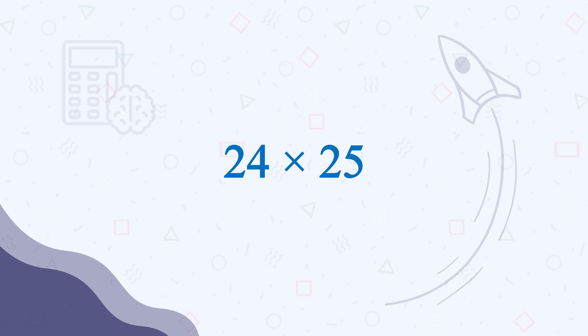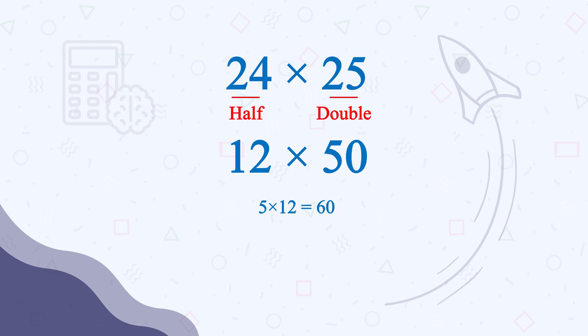We know we will double 25, so let's half the other one. It will be 12 times 50. We know 5 times 12 is 60. Now adding a 0 will make it 600, the final product of 24 times 25.